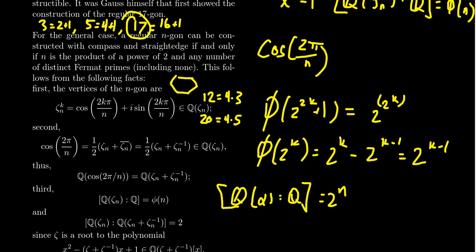As legend goes, Gauss had requested that the regular 17-gon be engraven upon his tombstone because he was so impressed by this result. Now, the engraver of the tombstone, again as legend, refused to do so because he claimed the engraving was too complicated to do.